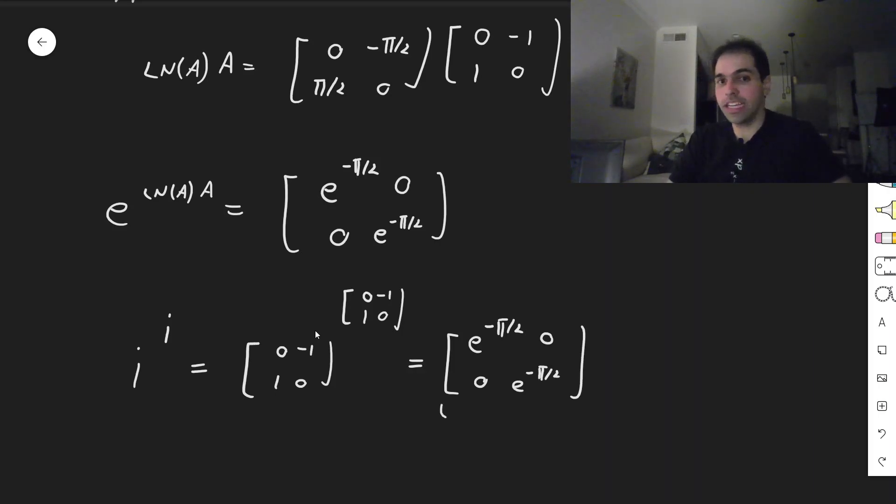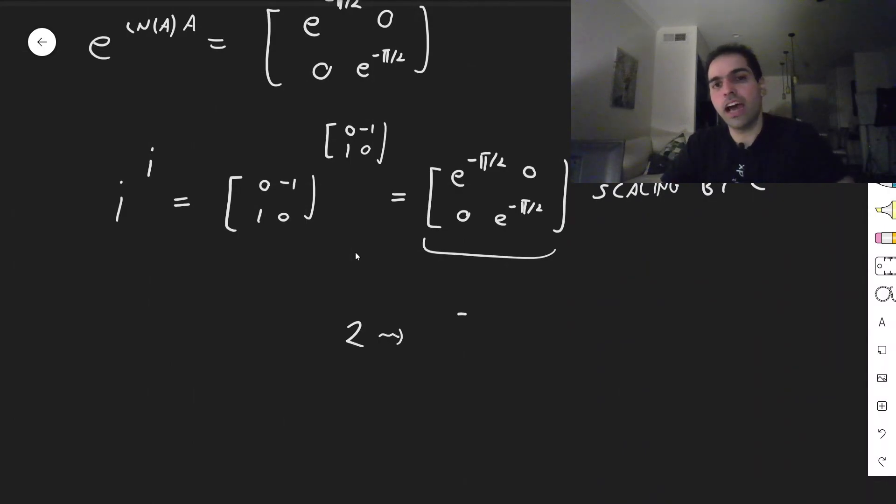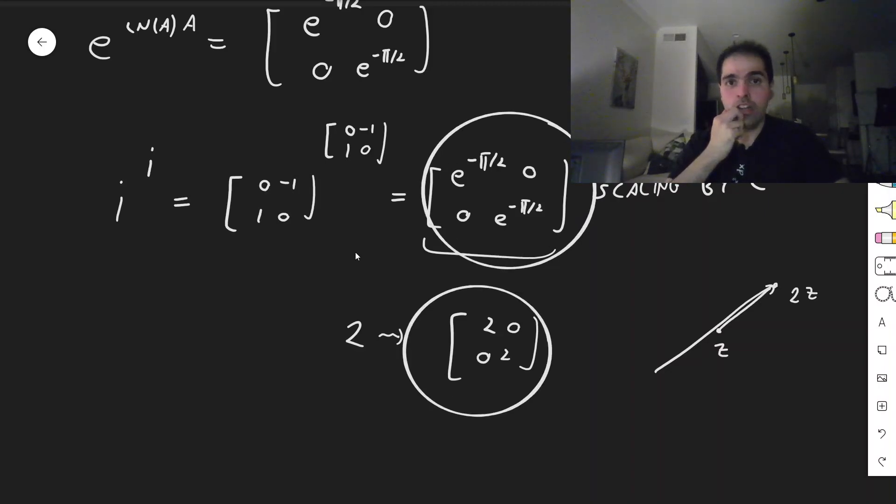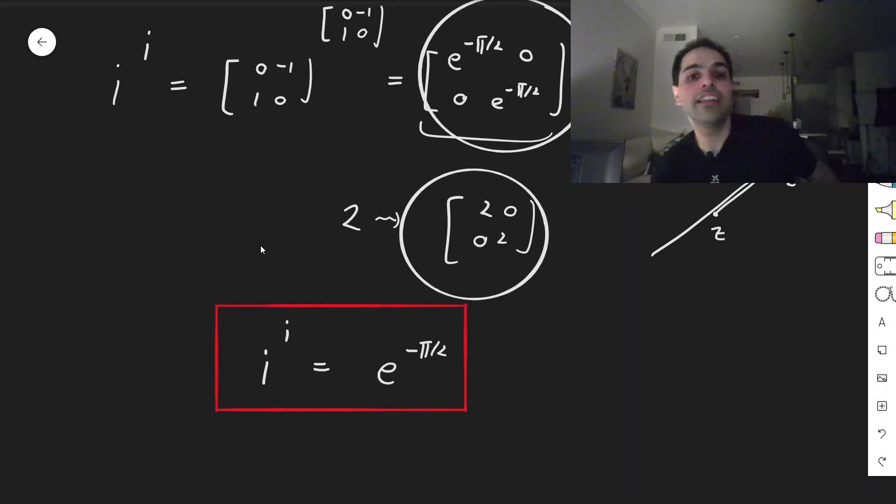But notice, geometrically, what this transformation does, it is scaling by E to the minus pi over 2. And this is precisely how to write real numbers in terms of matrices. So let's say the number 2 would be written as 2, 0, 0, 2, because if you multiply a complex number by 2, you just scale it by 2. So if this is Z, this is 2Z. So this is the representation of the number 2. In particular, this matrix here, it's none other than the representation of E of minus pi over 2.